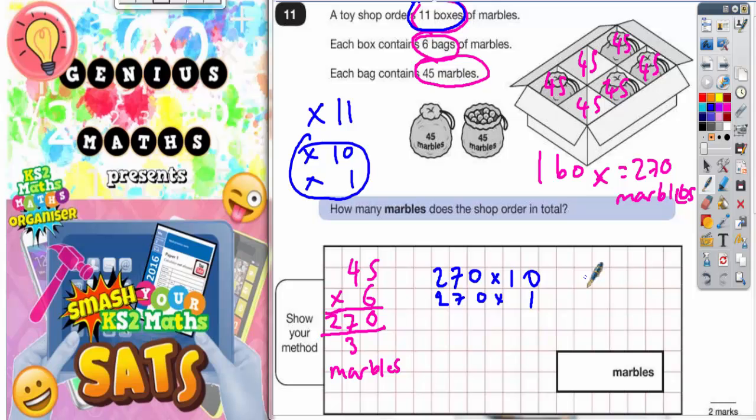So 270 times 10 will be 2,700, nice and easy, and 270 times 1 is just going to be 270.